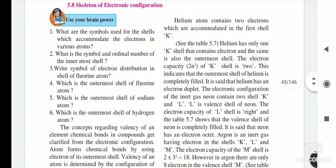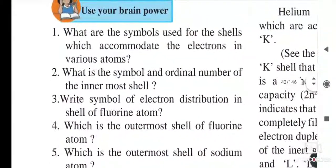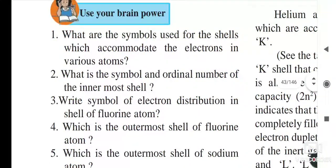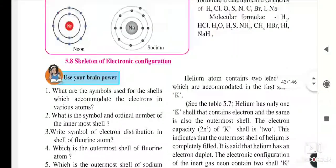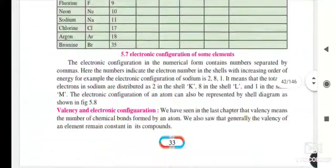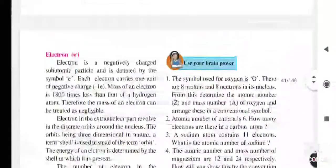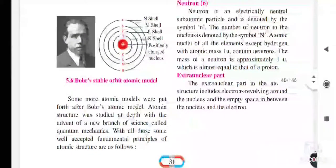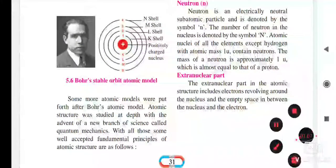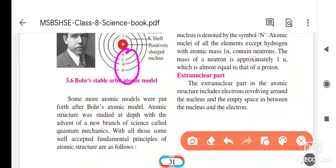The first question is: what are the symbols used for the shells which accommodate the electrons in various atoms? The answer is K, L, M, N — these are the symbols we use for the shells.